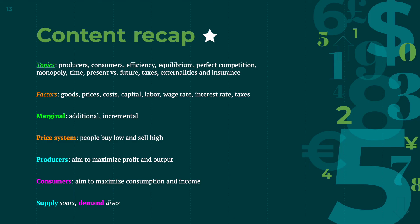To finish, here's a quick recap of the content we covered. We talked about a variety of topics, from consumers and producers, to externalities and insurance. We talked about different factors of consumption and production, from different goods and their prices, to taxes. We also talked about the price system, in which people want to buy low and sell high, and maximize profit, output, consumption, and income, and minimize costs.